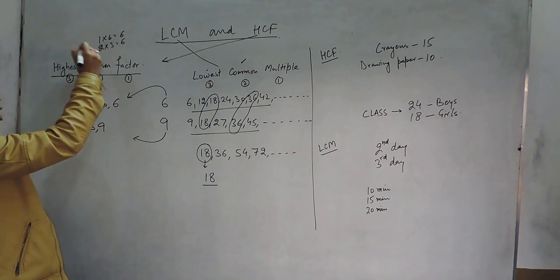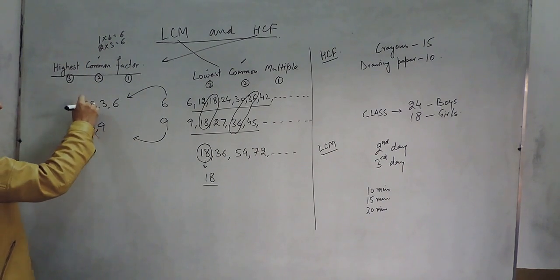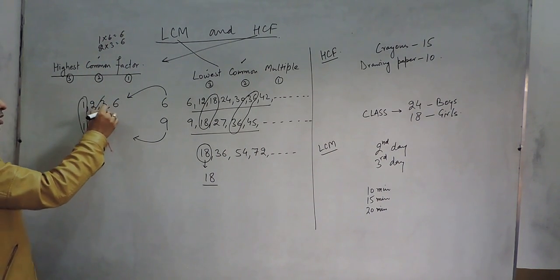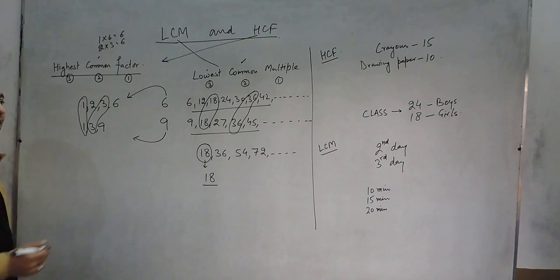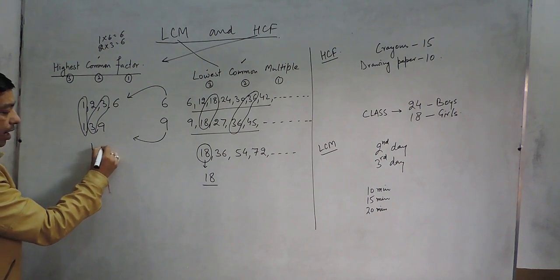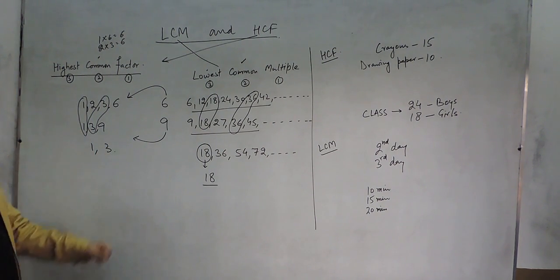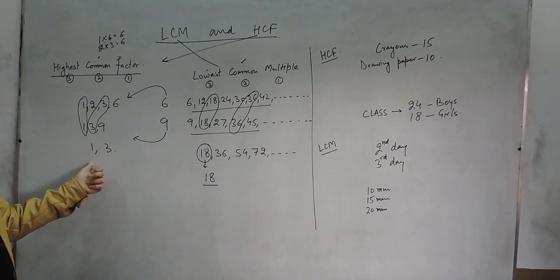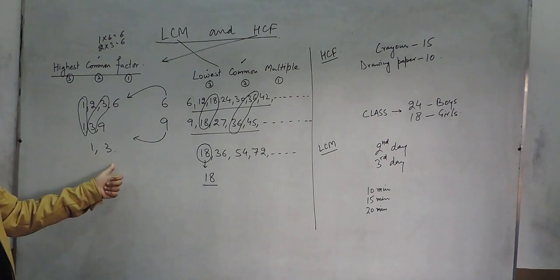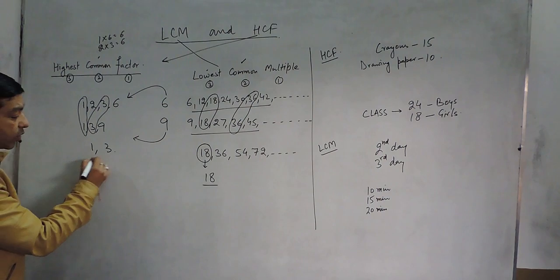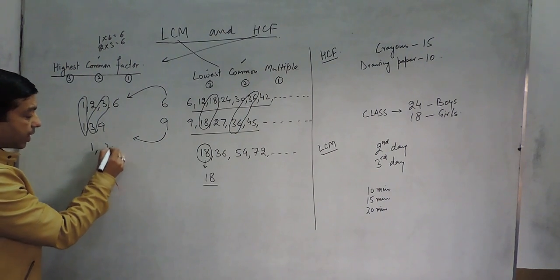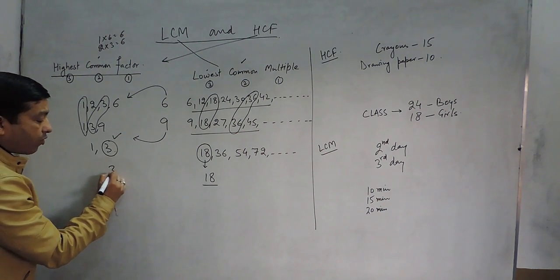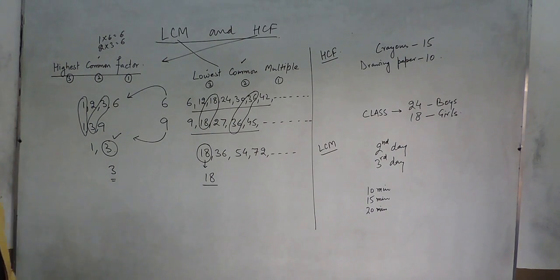If we look at the common factors now: 1 is common among the two, and 3 is also common. So the common factors of 6 and 9 are 1 and 3. The highest among them is 3. So 3 is the Highest Common Factor — the HCF is 3.